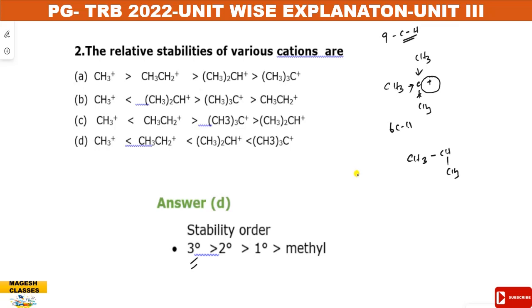In the order, we have options A and D. Comparing them, methyl is more stable than ethyl in that context. So the answer is D.